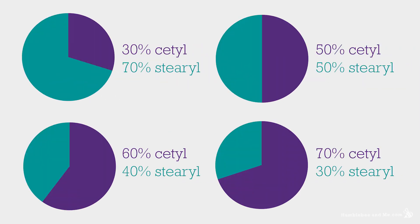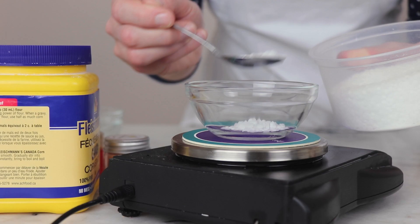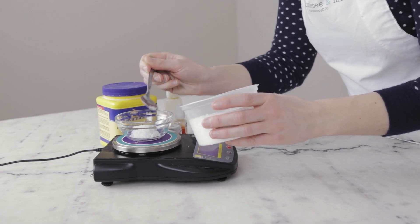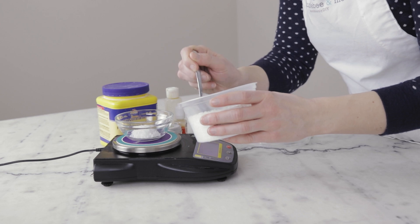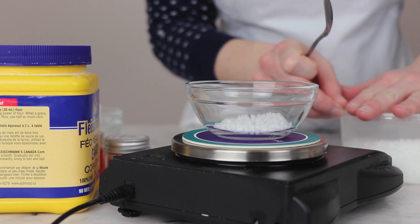In addition to the 30-70 blend that I have, I've also found 50-50, 60-40, and 70-30 blends. If the satiral alcohol you have is a different blend than the satiral alcohol that was used in the development of a formulation, you may get noticeably different results. For example, according to Ingredients to Die For, 30-70 is a more potent and effective thickener than 70-30, so you might need to use more satiral alcohol if you have 70-30 but the formulation was developed using 30-70.